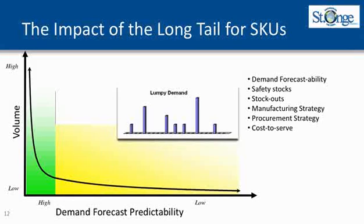Lumpy demand deals with in-season versus out-of-season issues, and multiple things start to come into play. The entire tail starts to affect stock-outs and can also affect your manufacturing strategies. Because of the slow volumes, you don't have the incentive to produce slow-moving SKUs. Essentially it starts to affect the entire cost-to-serve picture, which becomes critical when talking about supply chain efficiencies and inventory management.